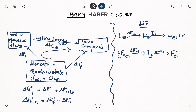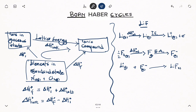Now that we have lithium as a cation and fluoride as an anion, we can combine them to form lithium fluoride. So we have lithium+ gaseous and fluoride- gaseous combining to give us lithium fluoride solid. The energy involved here is the lattice energy. So, can we use this to calculate the lattice energy?